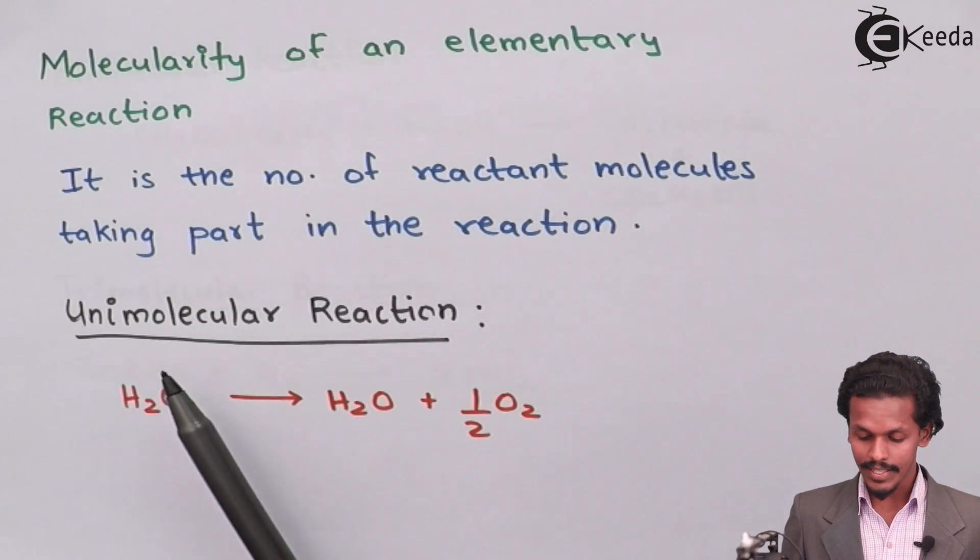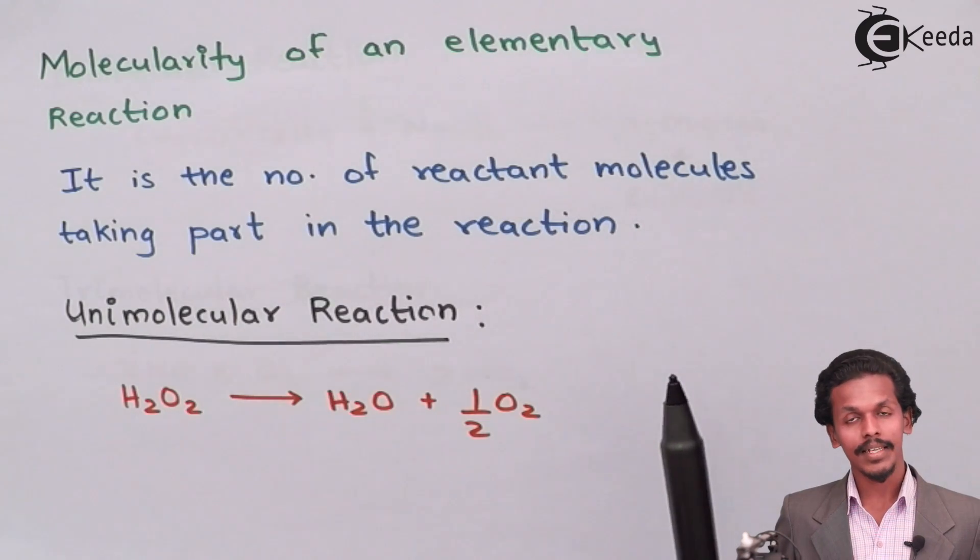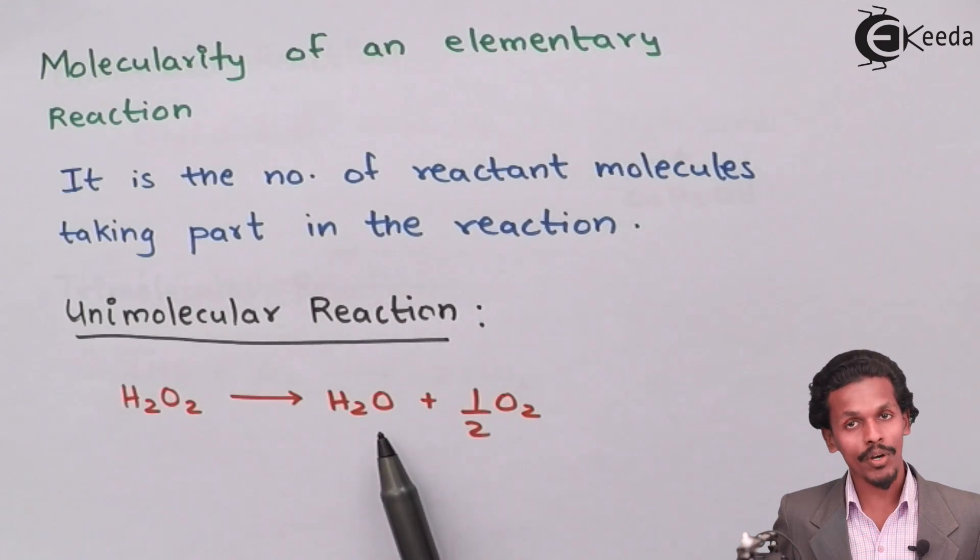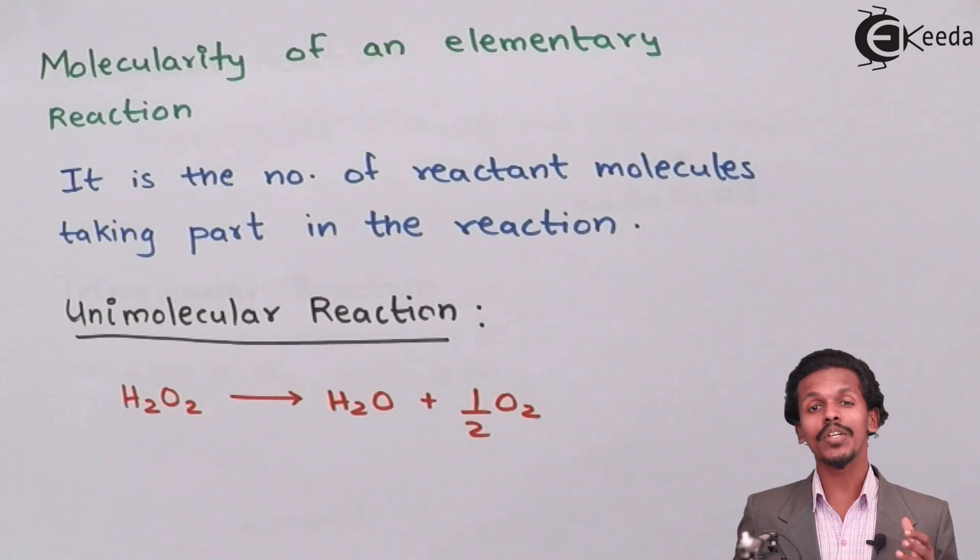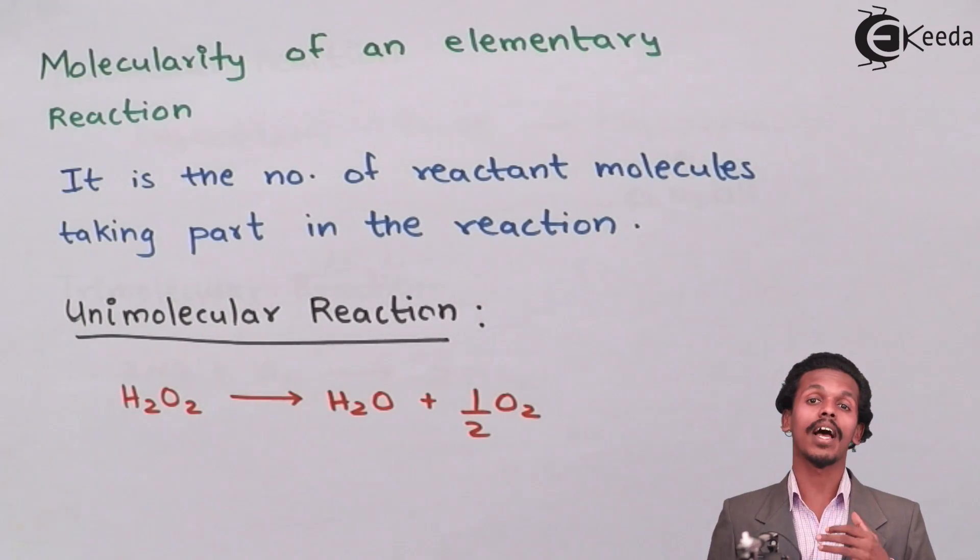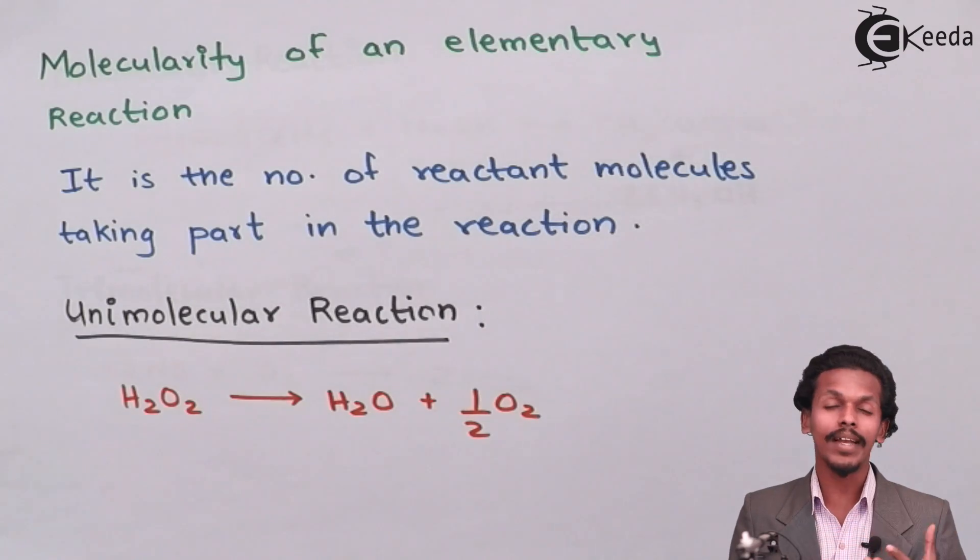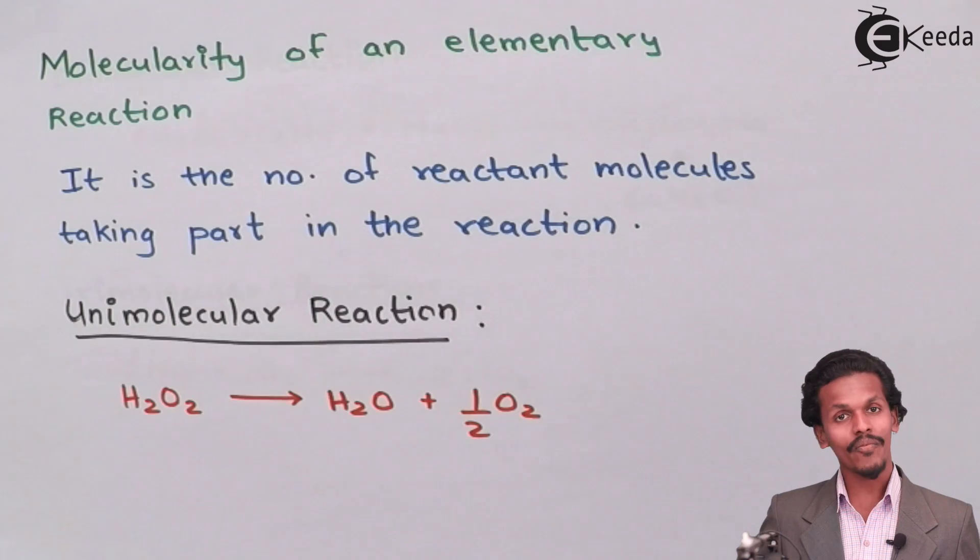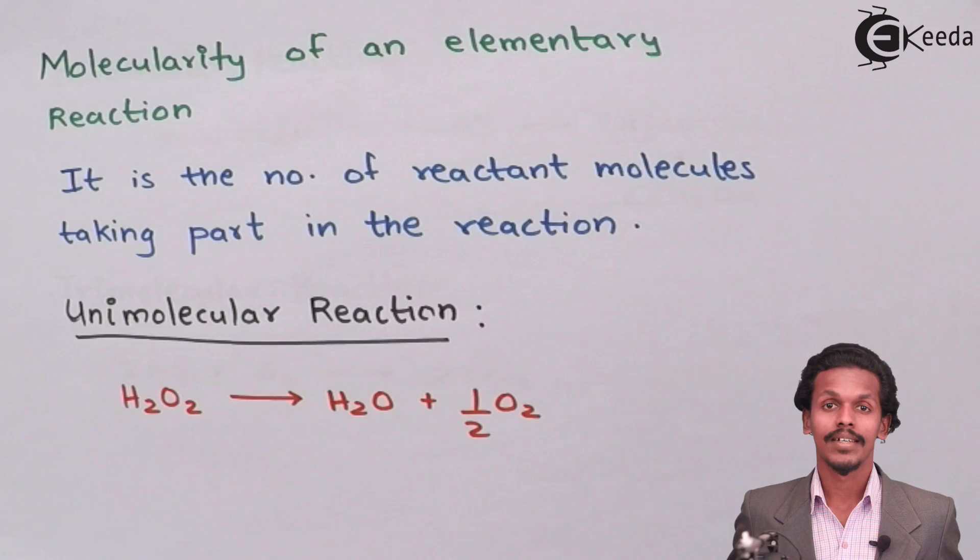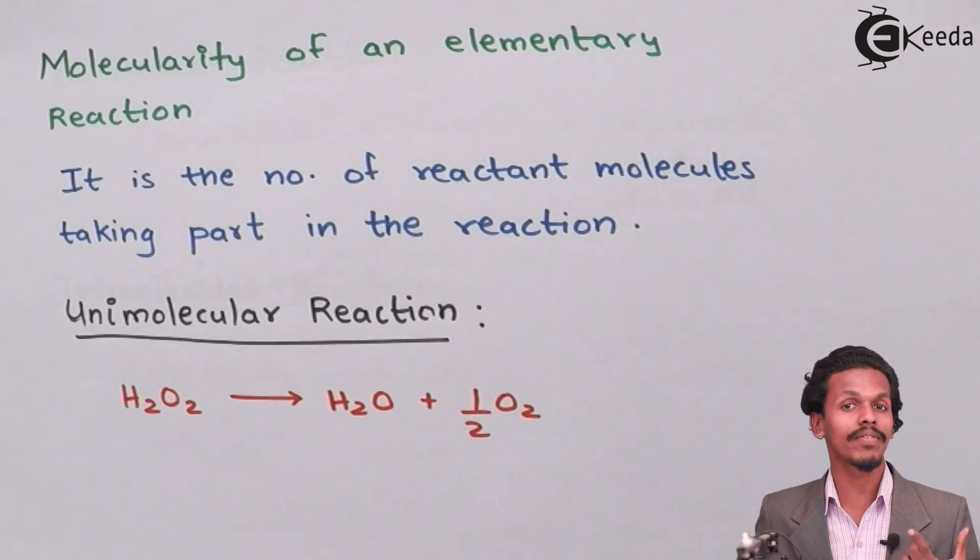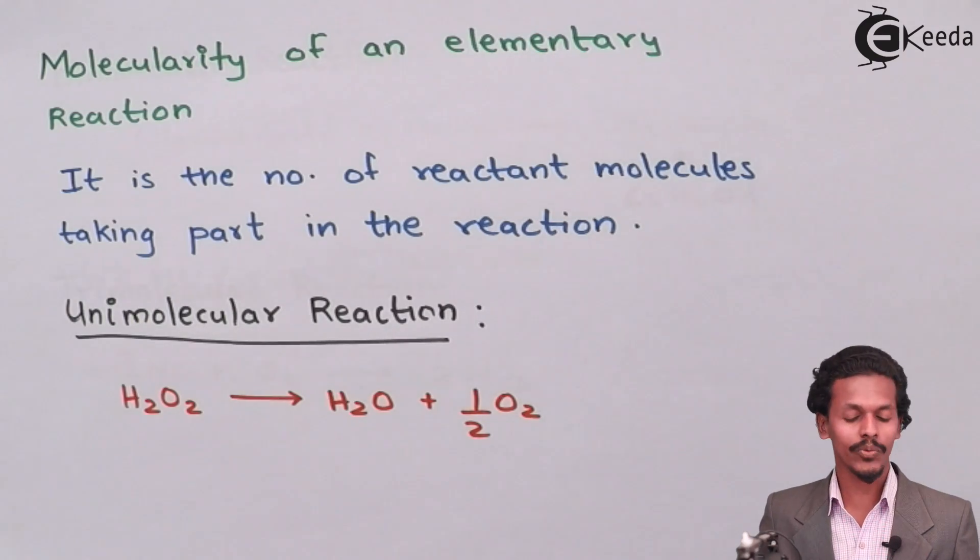I have given you an example in this case for unimolecular reaction. That is one mole of H2O2 that is peroxide is giving me water plus half times of O2. In this thing, what we should notice is we should notice only the reactant molecules and how many times or how many moles of the total reactants are being used. In this case, the total number of reactant moles is one. So therefore, it is a unimolecular that is the molecularity of this reaction is one.